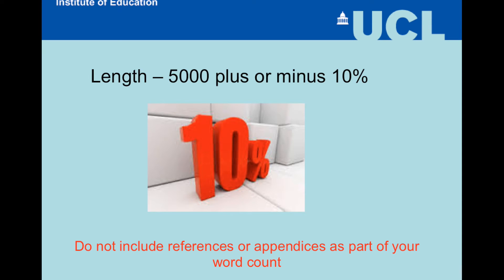The length of our assignments is 5,000 words, plus or minus 10%. When you do your word count — most of us write in Word — there is a section under Tools for automatically measuring your word count. Don't include references or appendices as part of this. Please do not go under the word count or over it, because that unfortunately brings an automatic fail.